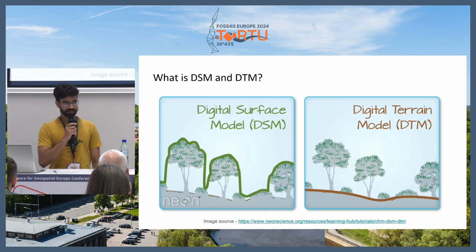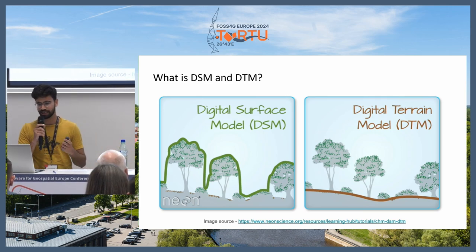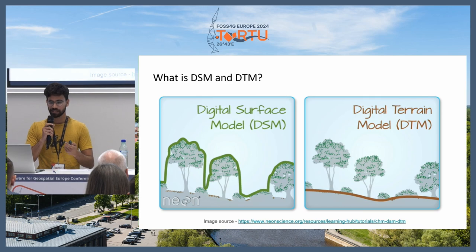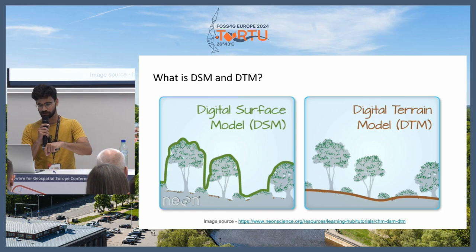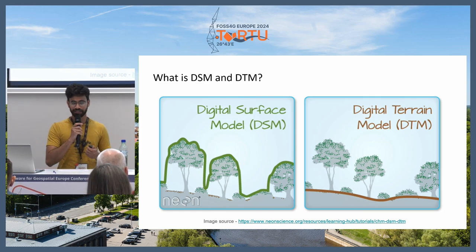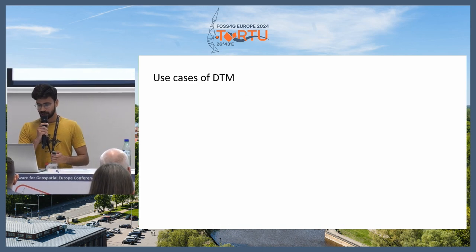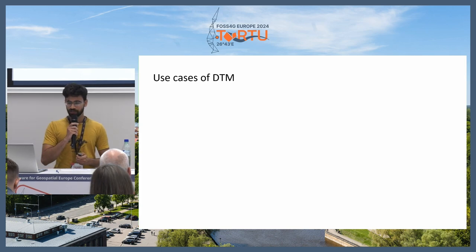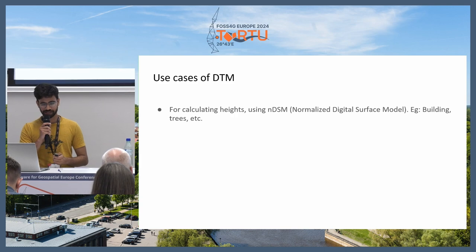This image is a good visual representation of the difference between DSM and DTM. On the left, the green line represents a DSM raster — each pixel represents surface elevation values including vegetation. On the right, the brown line represents a DTM raster — just the bare terrain. Some use cases of DTM include calculating heights using NDSM.